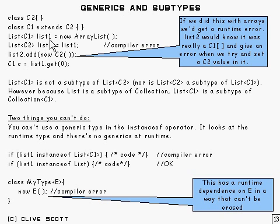We make a list1 here. And if you try and set list2 equal to list1 so that they both refer to the same thing, you'll get a compiler error. It might strike you as a bit surprising because you might initially think that this list1 was a subtype of list2, but of course it isn't.